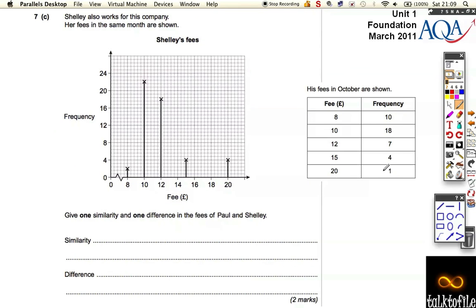So I've just copied this page here, because this page is too small to fit everything on, you can flip back in your exam book. We know there was a total of 40 fees in total. This is Paul's fees. Shelly also works for this company. Her fees are shown the same, except she's got hers in a graph, rather than a table.